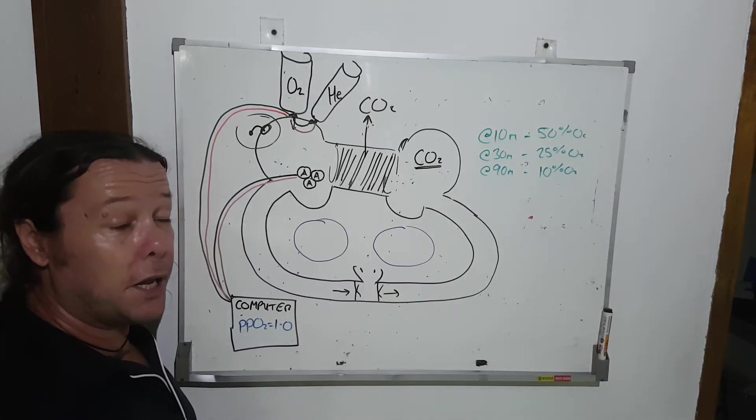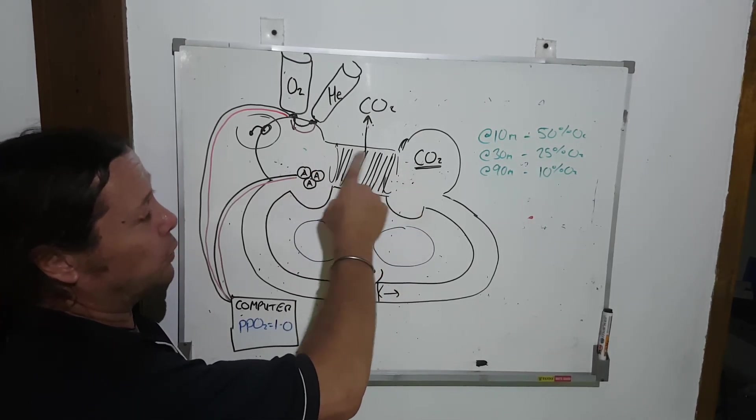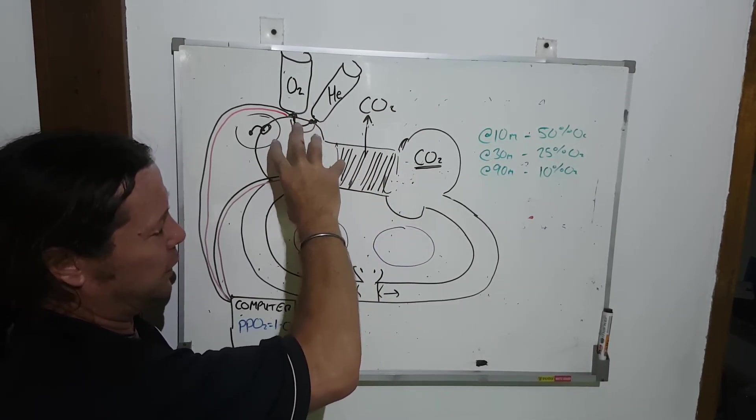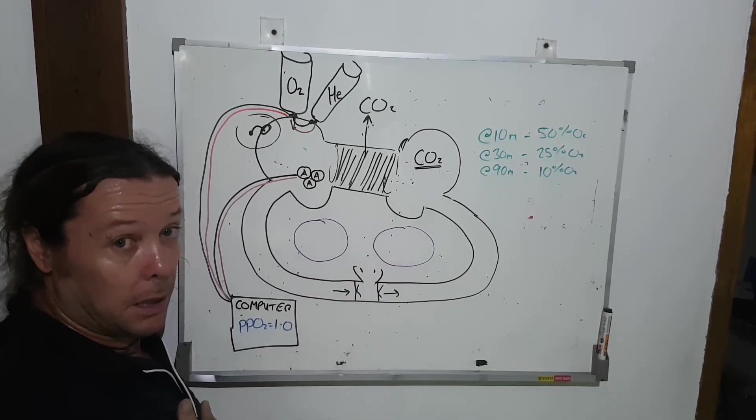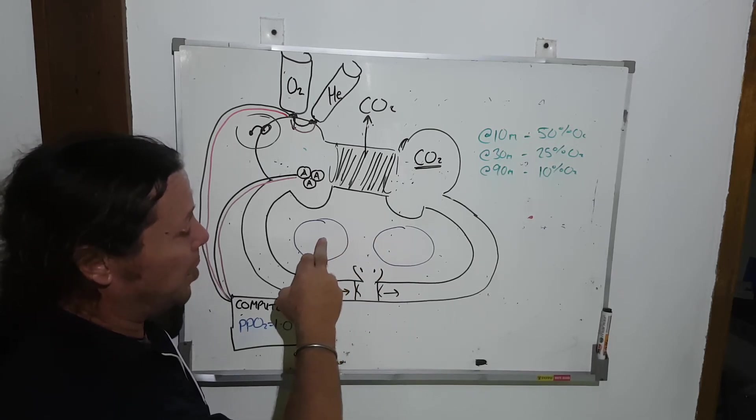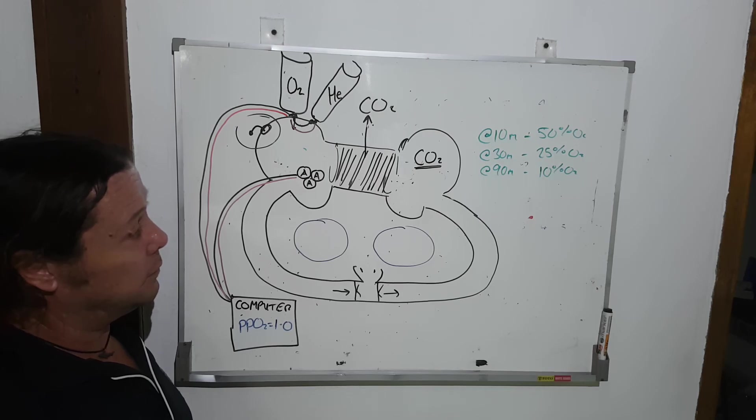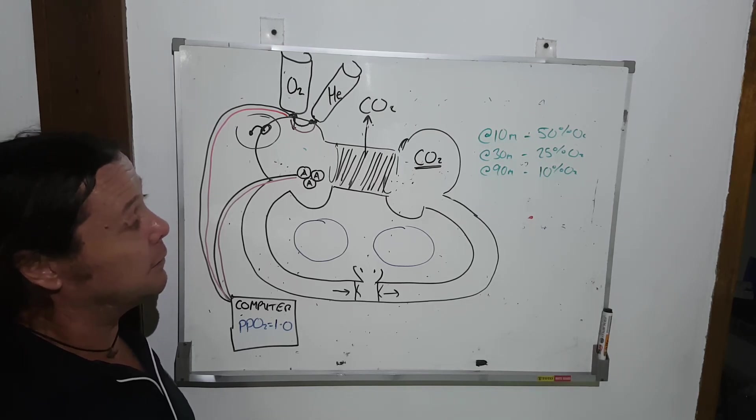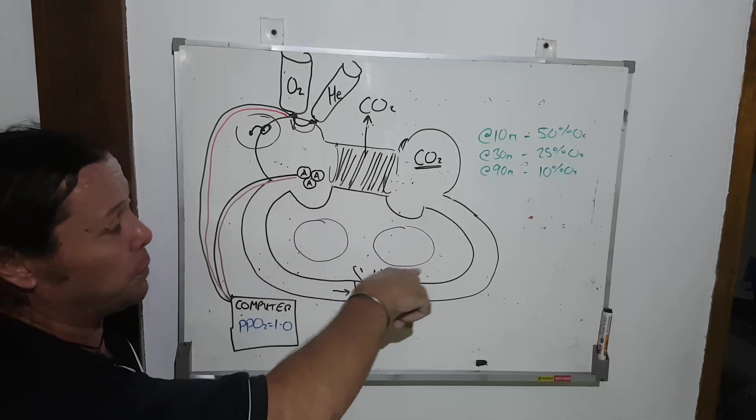When I breathe in, the air goes from these two bags, called counter lungs—this volume here is flexible—into my flexible balloons, my lungs. When I breathe out, the air from these two bags goes into these two bags, which means that my breathing does not really affect my depth in the water. I carry on. At that point in the breathing loop, this is called neutral.